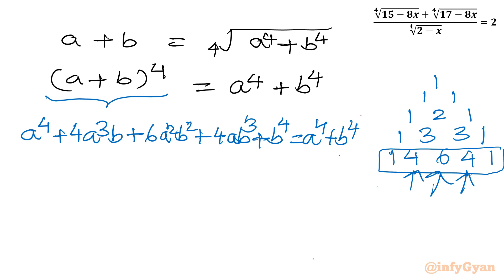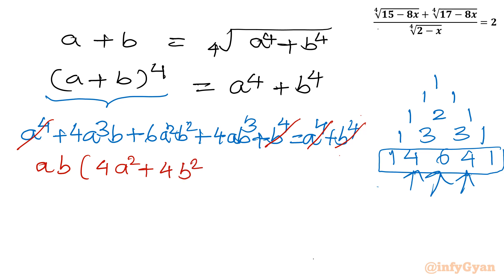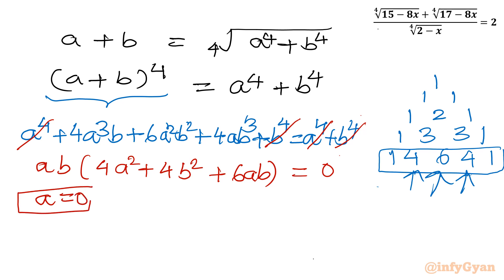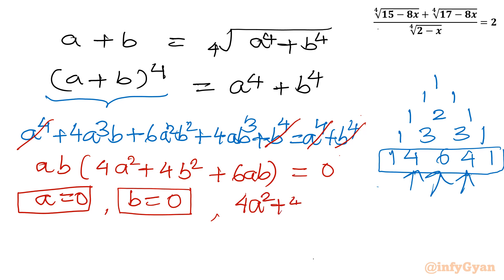We can cancel a⁴ plus b⁴ from both sides. Then I will take 'ab' as a common factor, giving: ab times (4a² plus 6ab plus 4b²) equals 0. From this equation of the form f times g times h equals 0, we get three cases: a equals 0, or b equals 0, or 4a² plus 6ab plus 4b² equals 0.